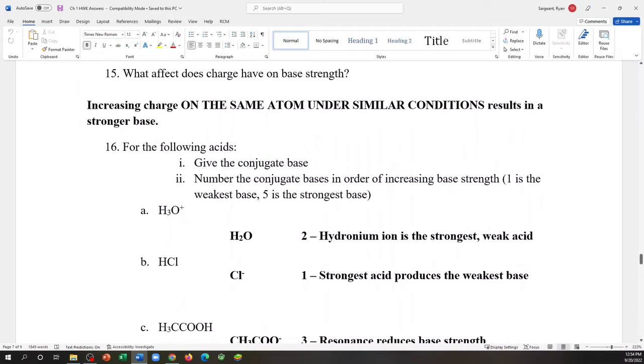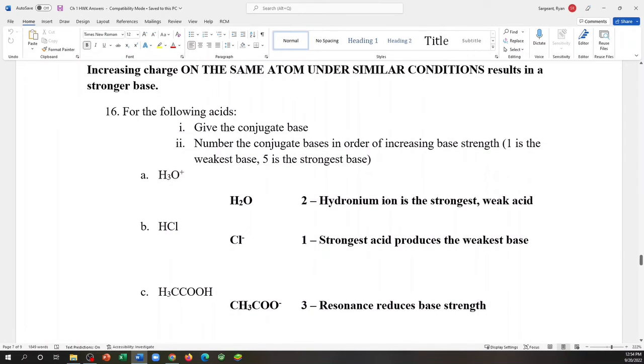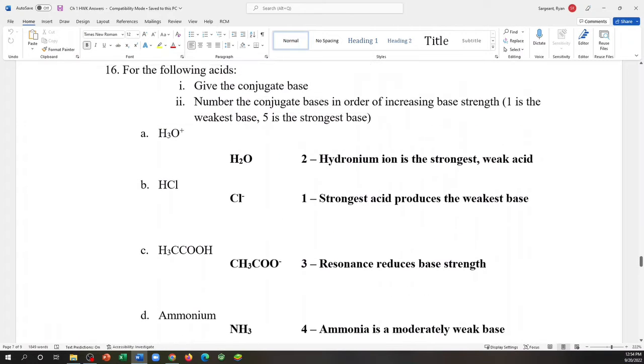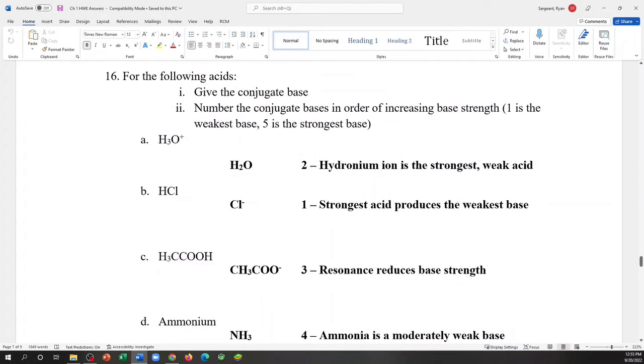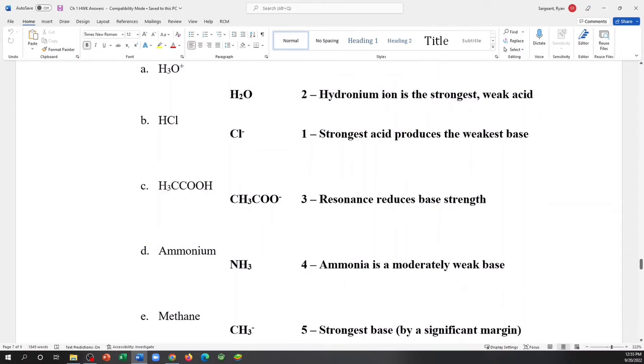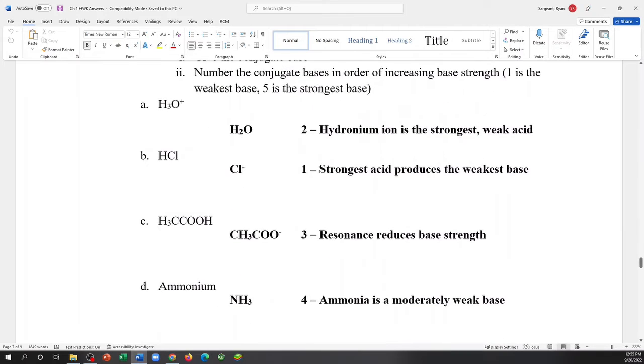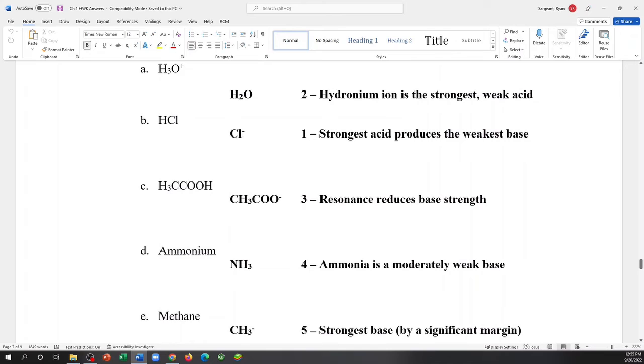All right, now it's asking number the conjugate bases in order of increasing base strength, where one is the weakest and five is the strongest. And actually the easiest way to answer this question is to ignore the conjugate bases that you just drew and go back to these original acids right here. Because if you know what the weakest or strongest acid is, then you should also know what the strongest or weakest conjugate base is.